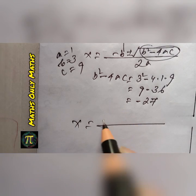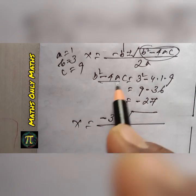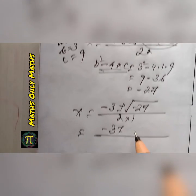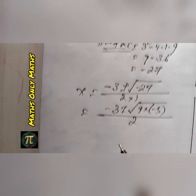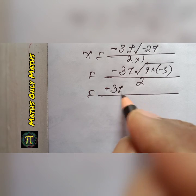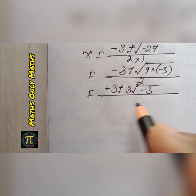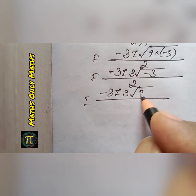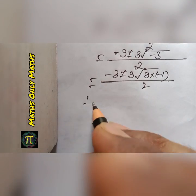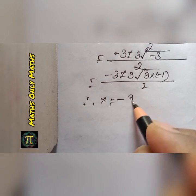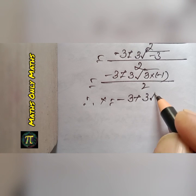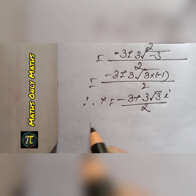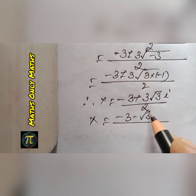So x = (-(-3) ± √(-27)) / (2 × 1) = (3 ± √(-27)) / 2. Now √(-27) = √(9 × 3 × (-1)) = 3√3 · i. Therefore x = (-3 ± 3√3 · i) / 2, giving the two complex solutions x = (-3 + 3√3 i) / 2 and x = (-3 - 3√3 i) / 2.